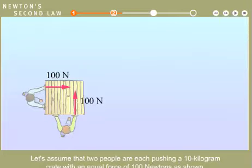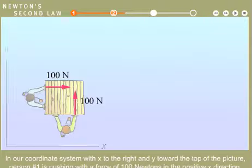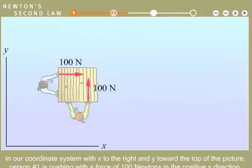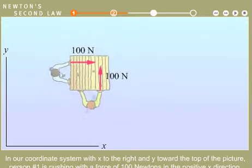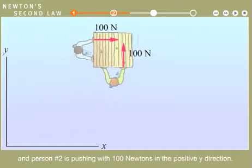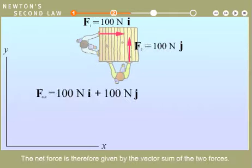Let's assume that two people are each pushing a 10 kilogram crate with an equal force of 100 Newtons as shown. In our coordinate system with X to the right and Y toward the top of the picture, person number one is pushing with a force of 100 Newtons in the positive X direction, and person number two is pushing with 100 Newtons in the positive Y direction. The net force is therefore given by the vector sum of the two forces.